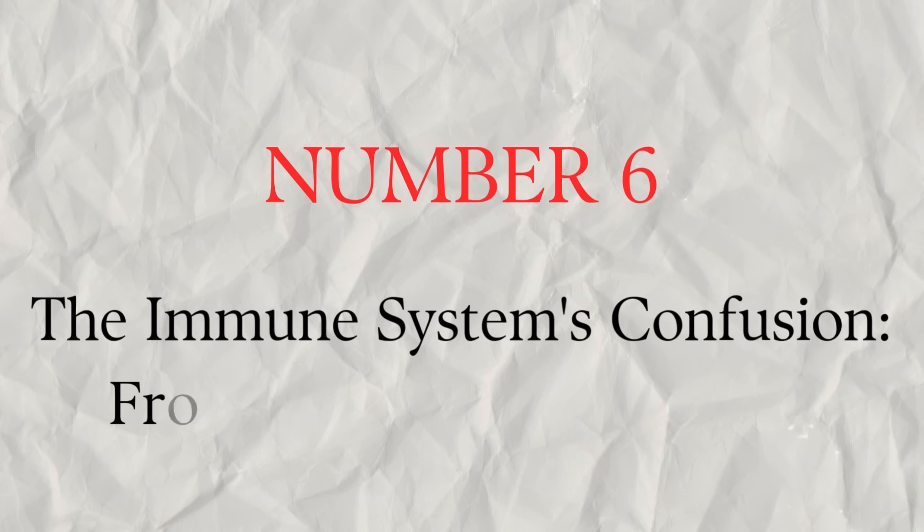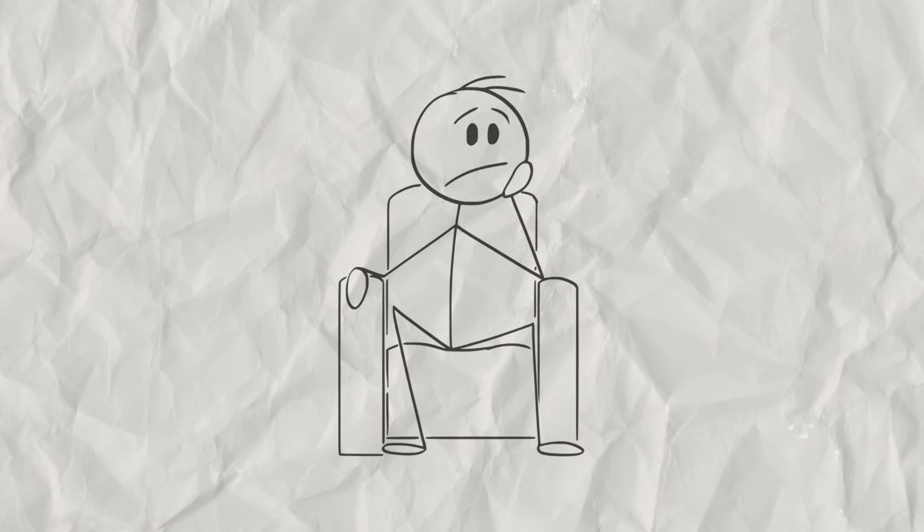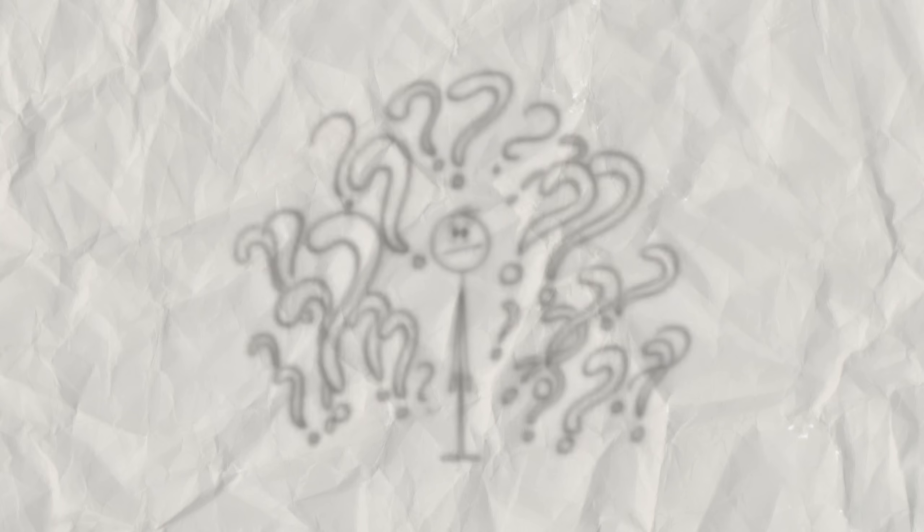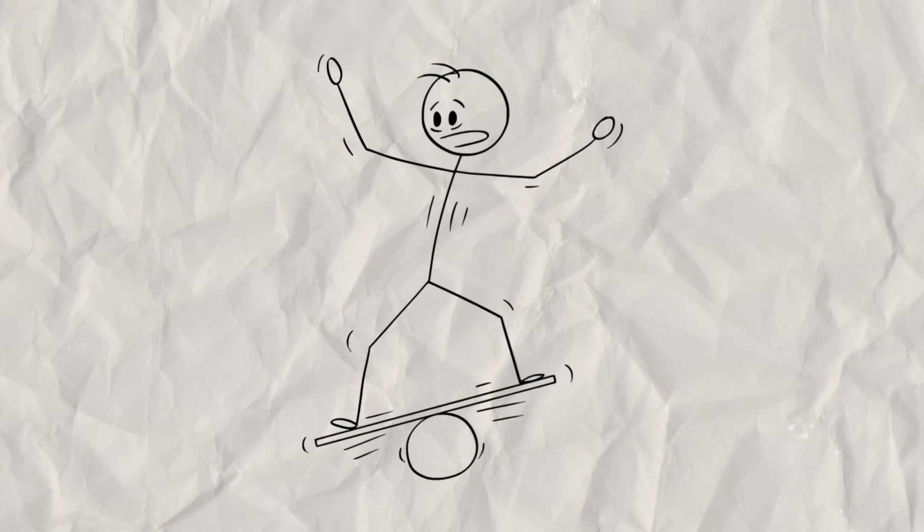Number six. The immune system's confusion. From protector to attacker. Your immune system is designed to protect you from invaders. But when you're under chronic stress from trauma, it can become confused, shifting from a balanced protector to an overactive or underactive system.